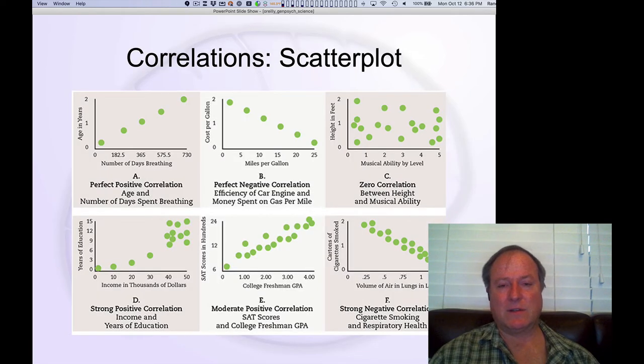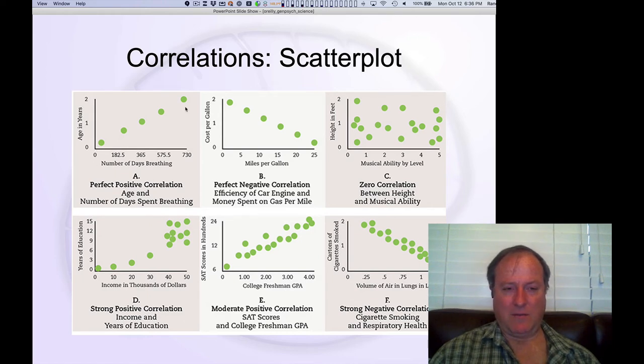Correlational data - the standard approach is to generate one of these scatterplots. You plot the values in one of the variables along the x-axis and the other variable on the y-axis, and you plot each data point as its corresponding value along both of those axes. The patterns you typically see here: you see a perfect, very rare - you never see this in real data - positive correlation going up like this, which means that the number of days breathing is exactly related to the age in years. And a negative correlation is the opposite direction.